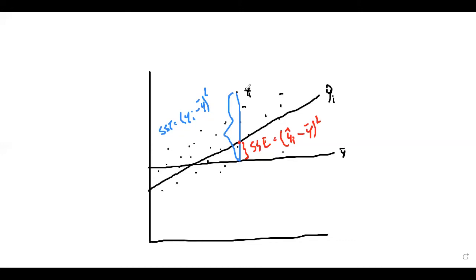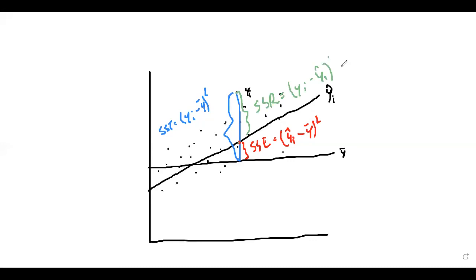SSR is the sum of squared residuals. The residual is the difference between y_i and ŷ_i. The actual data point is at y_i and the fitted value is at ŷ_i, so the distance between them is SSR — written as (y_i minus ŷ_i) squared, or simply û_i squared.